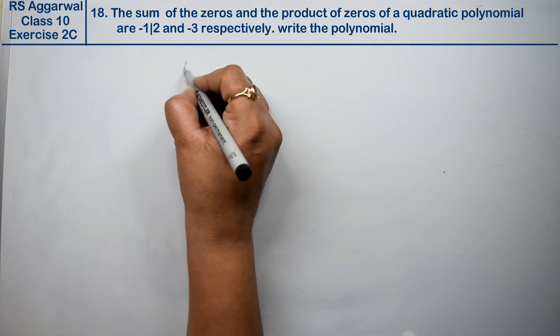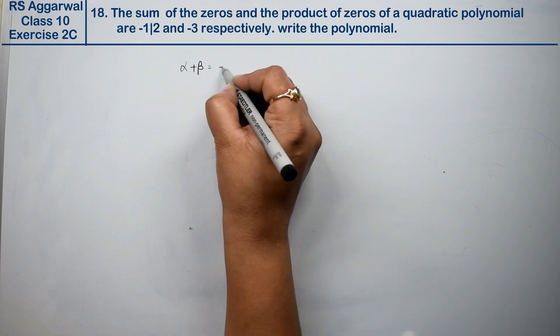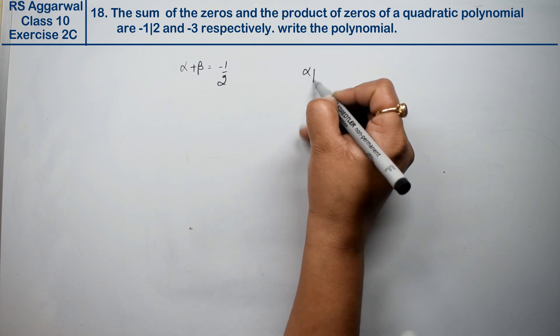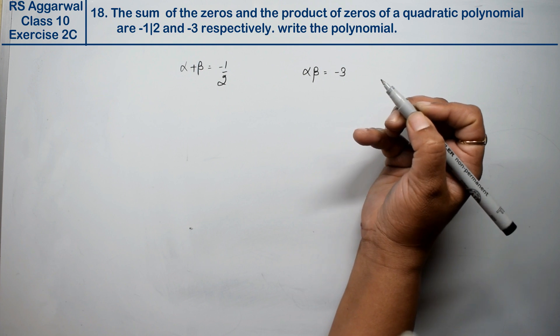The sum of the zeros, that is alpha plus beta, its value is minus 1 upon 2, and the product of zeros, that is alpha beta, its value is minus 3. And we will make a polynomial.